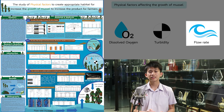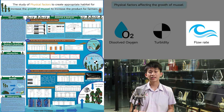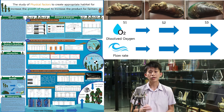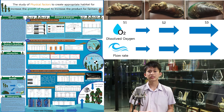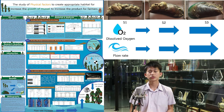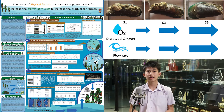From my analysis, I found that chlorophyll had the most effect on the growth of mussels. Then, I studied the relationship between biological factors and physical factors, and I found that chlorophyll is inversely proportional to the number of barnacles, and chlorophyll is also directly proportional to dissolved oxygen, both with statistical significance.